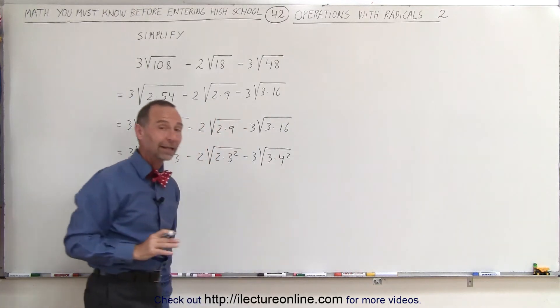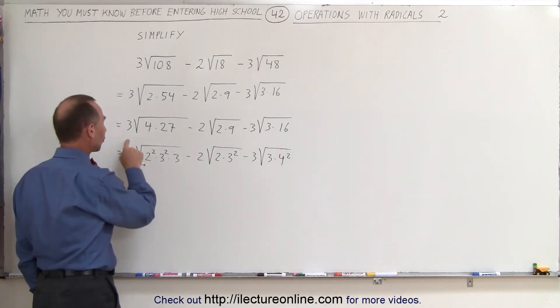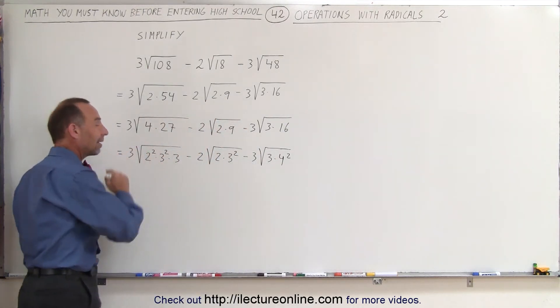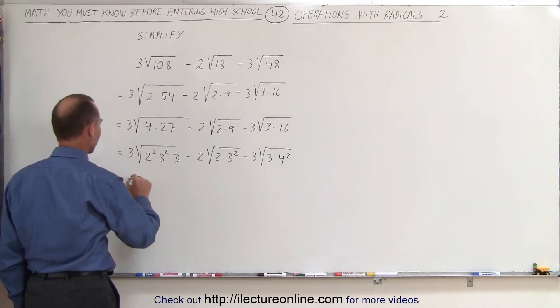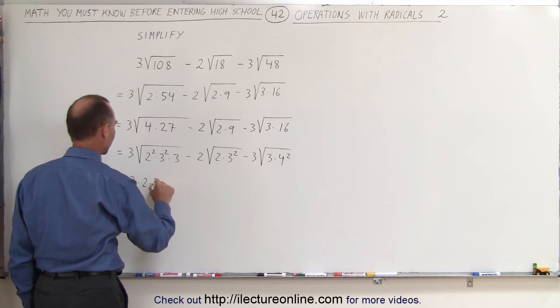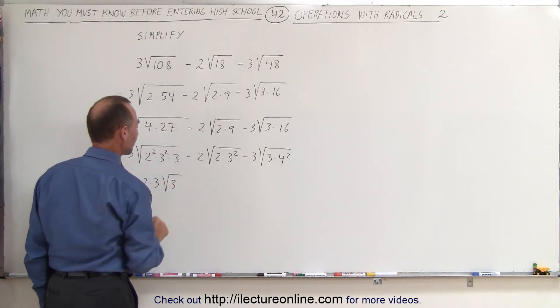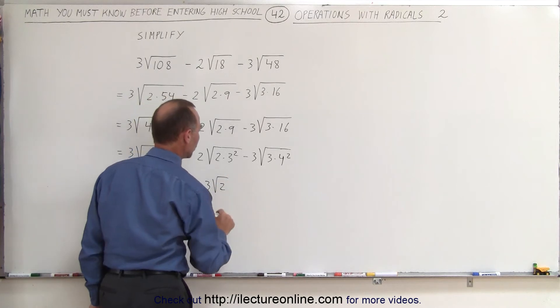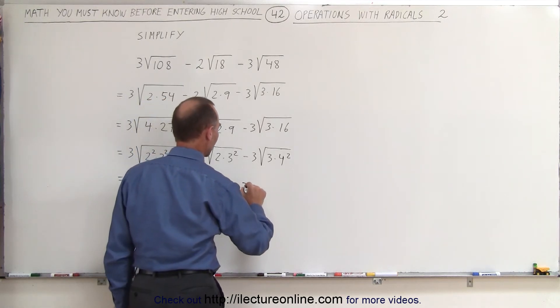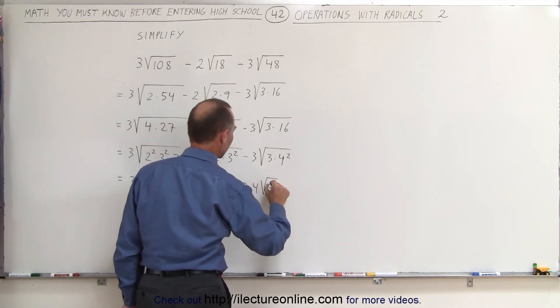Again, the reason why we like to do that is that whenever we see a square root of something squared, we can take it outside the radical. So now this can be simplified to 3 times 2 times 3 times the square root of 3, minus 2 times 3 times the square root of 2, and minus 3 times 4 times the square root of 3.